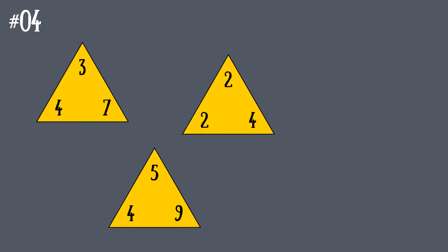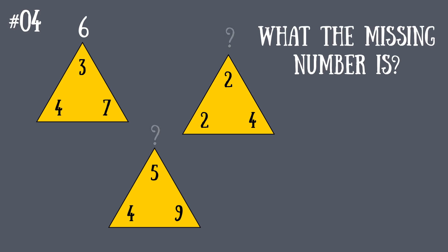Riddle number four: One triangle has all its numbers in place, but the other two miss the numbers on top. Can you guess them? Try to find the correct pattern and use it in 15 seconds.